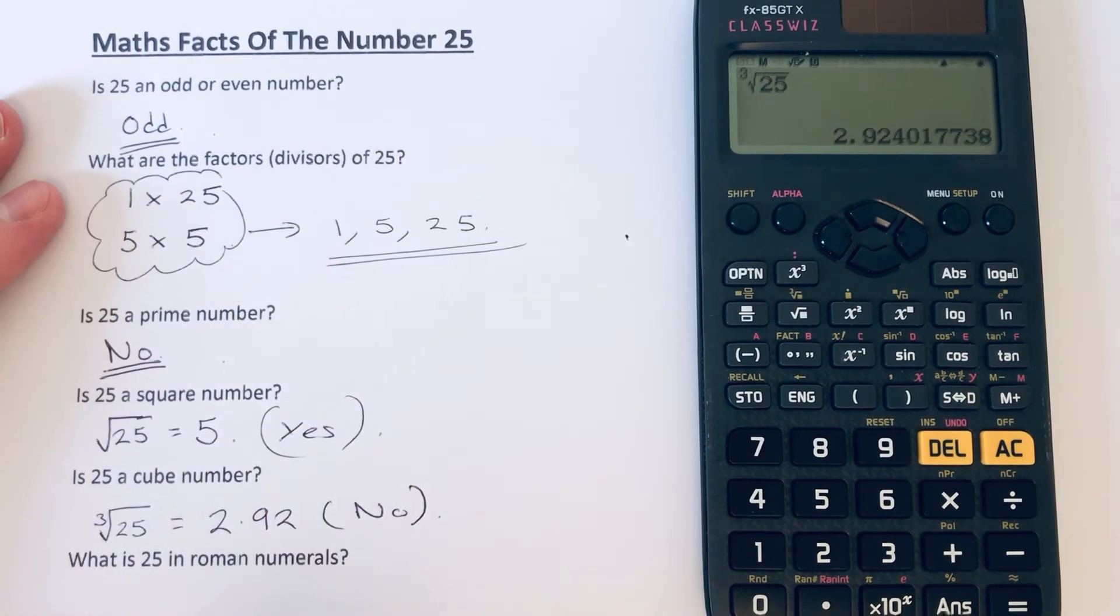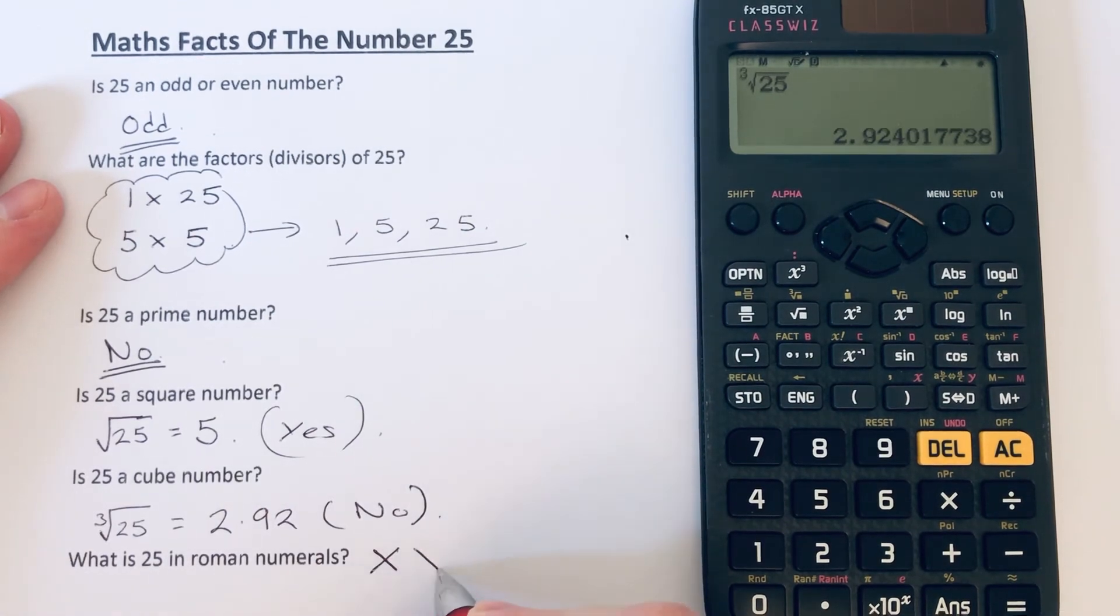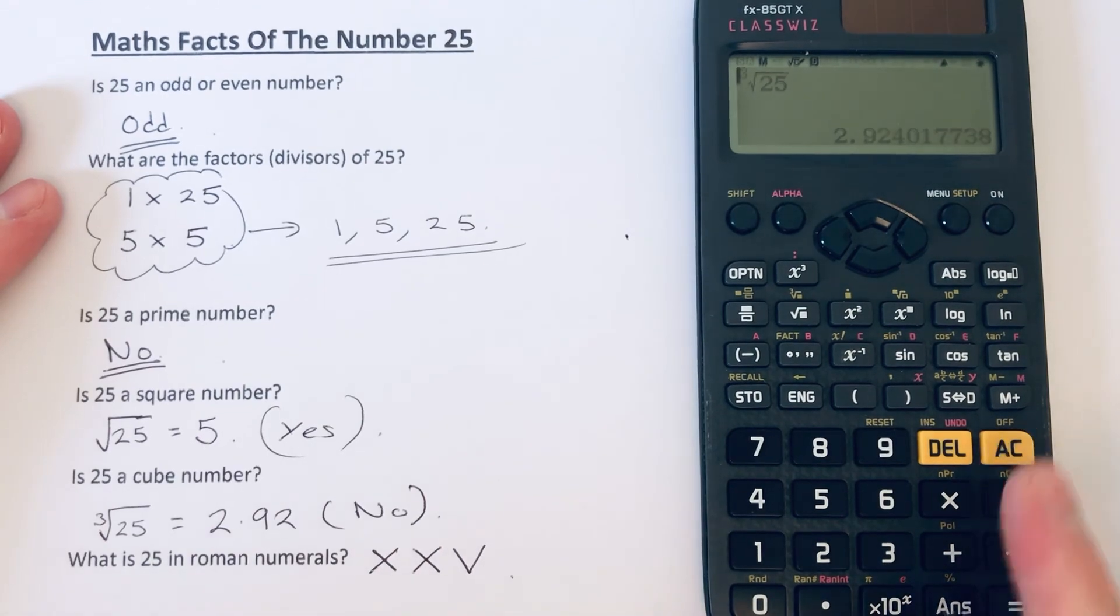And our final question, what is 25 in Roman numerals? Well, we can do an X for 10, another X for 10—that's 20—and then we just need to do the 5, which is V.